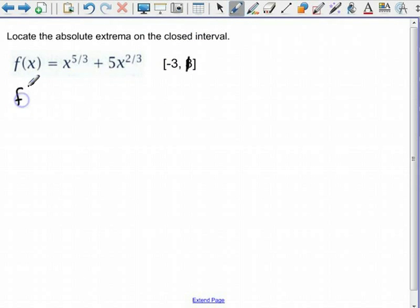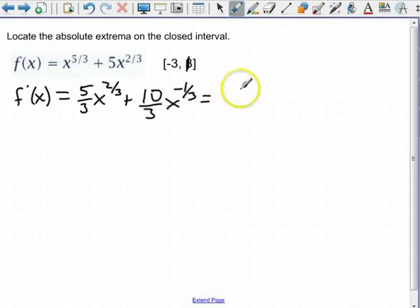So f prime of x is 5 thirds x to the 2 thirds plus 10 thirds x to the negative 1 third, which is equal to 5x to the 2 thirds over 3 plus 10 over 3x to the 1 third.